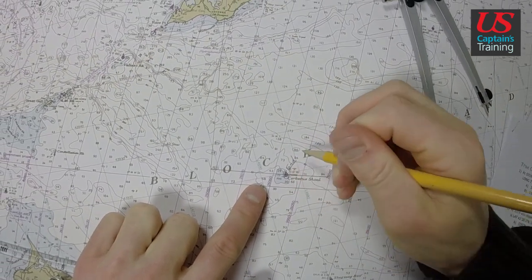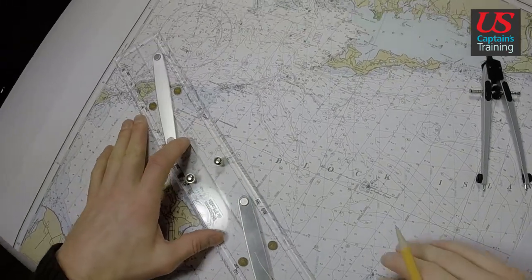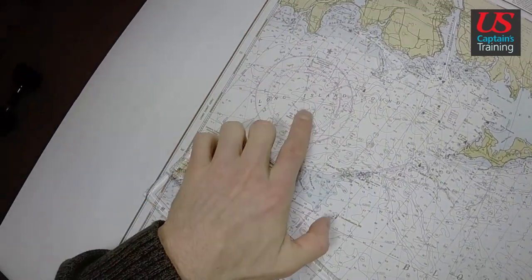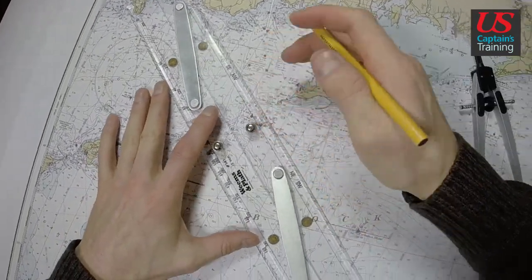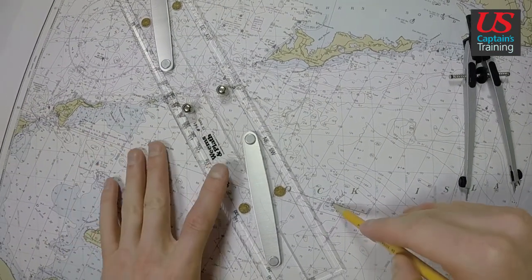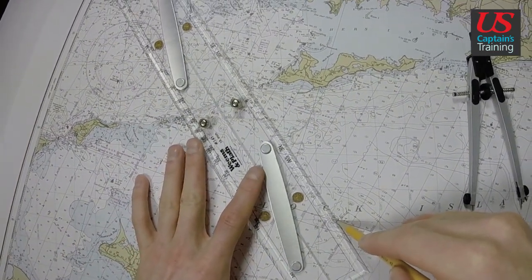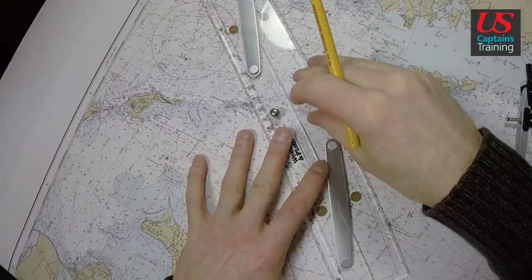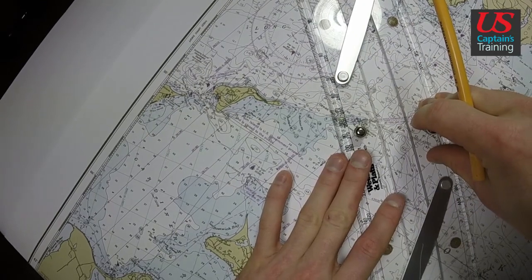And the question asks, what is the true course made good? I have a compass rose over here. This one is a bit challenging to read. We are going to use it though. Now, a tip: I like to put my pencil right on that X, scoot one side of my parallel rules up to it, line it up with the other, hold it, and now bring it to the very middle of that compass rose.